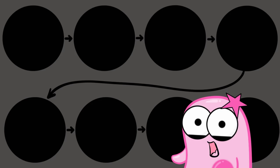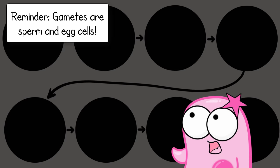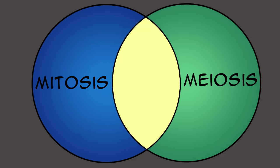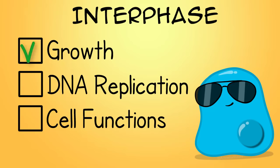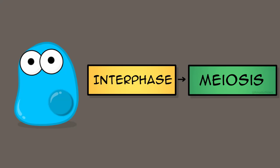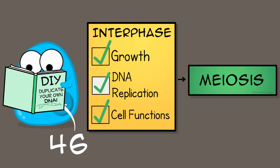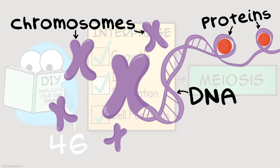Before we get into the stages of meiosis, we have to remember what happens before meiosis can even start — and this also happens before mitosis. It's the stage known as interphase, when the cell is growing, replicating its DNA, and carrying out cell processes. Interphase happens before meiosis is going to start. The starting cell has 46 chromosomes, and you have to duplicate those chromosomes in interphase before meiosis begins, since chromosomes are made of DNA and protein.